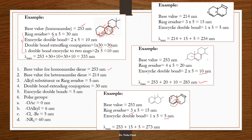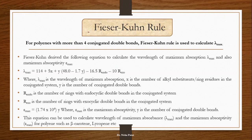If there are more than four double bonds in a compound, it becomes cumbersome to calculate using the standard approach. Fisher therefore gave another rule: identify X — the number of alkyl substituents or ring residues; Y — the number of conjugated double bonds present; R-endo — the number of rings with endocyclic double bonds; R-exo — the number of rings with exocyclic bonds. Using these values you can calculate lambda max and also epsilon max, the maximum absorptivity.